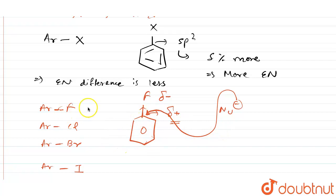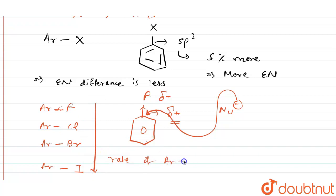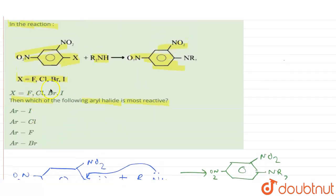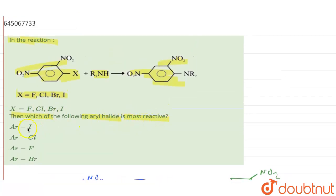So as you go down the group, the ArSN2 rate is decreasing, and the fastest rate is for ArF. Therefore, the most reactive aryl halide is ArF — that is the correct answer for this question.